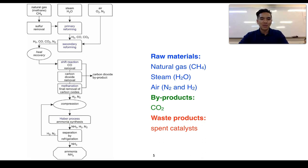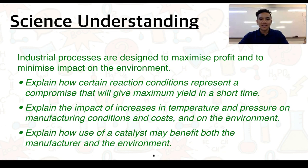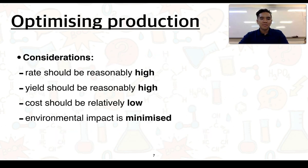For the remainder of the video, we're now going to consider this science understanding: industrial processes are designed to maximise profit and to minimise impact on the environment. You need to explain how certain reaction conditions represent a compromise that will give maximum yield in a short time, explain the impact of increases in temperature and pressure on manufacturing conditions, costs, and the environment, and explain how the use of a catalyst may benefit both the manufacturer and the environment. Considerations for a manufacturer include: a reasonably high rate of reaction, a reasonably high yield, minimum costs, and minimum environmental impact.